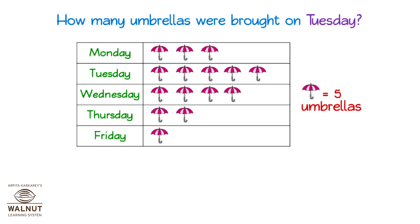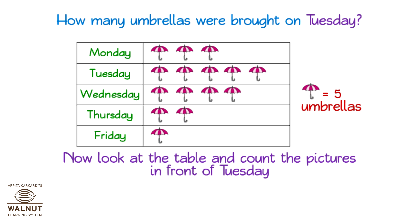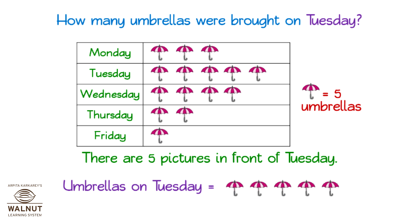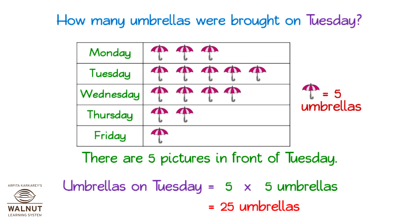How many umbrellas were brought on Tuesday? Look at the table and count the pictures in front of Tuesday. There are five pictures in front of Tuesday. Umbrellas on Tuesday equals five symbols, so five into five umbrellas is equal to twenty-five umbrellas.